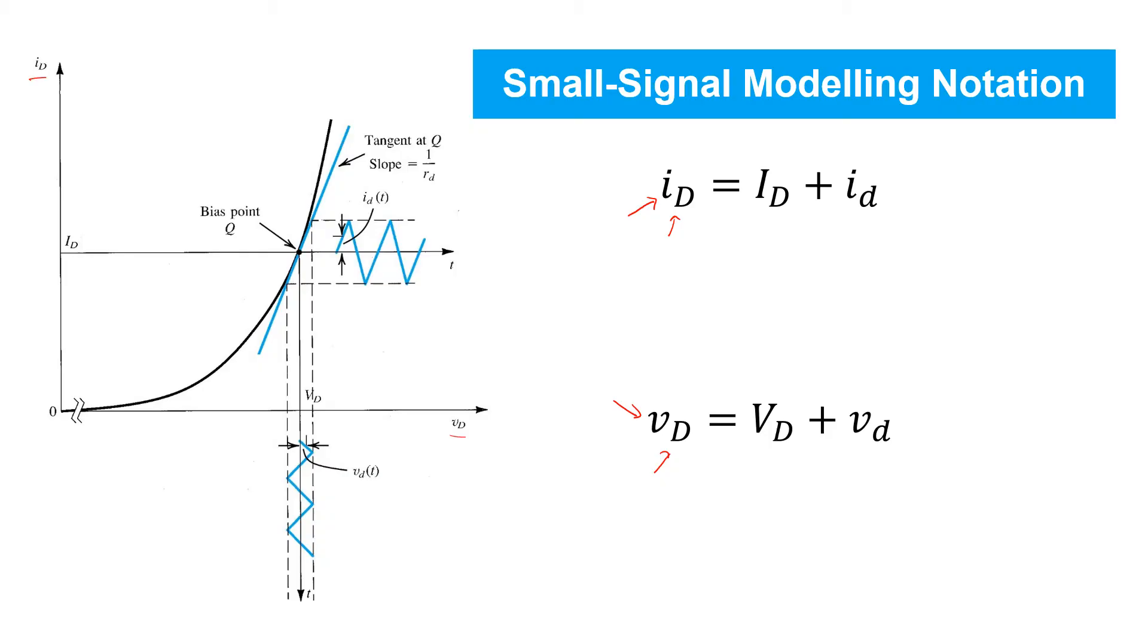That is, it's the superposition of the bias point Q and incremental changes around it. Then we will have separate symbols to identify the bias point, all uppercase. And the incremental or so-called small signal quantities will be denoted with all lowercase symbols.